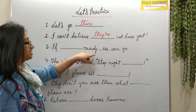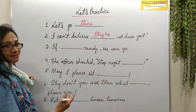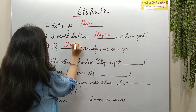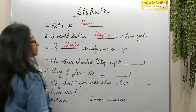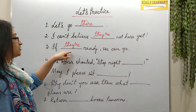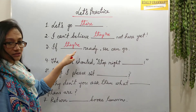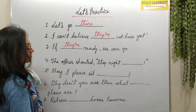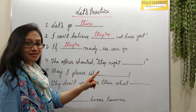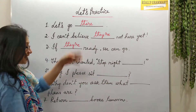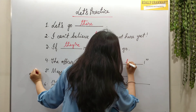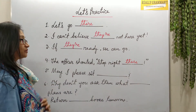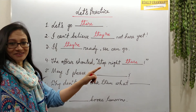'If blank ready, we can go' — it will be the contracted form: 'If they're ready, we can go.' Next: 'The officer shouted, stop right blank' — at that place — T-H-E-R-E: 'The officer shouted, stop right there.'